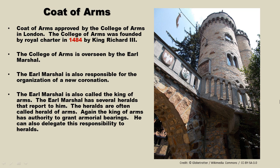Each coat of arms is approved by the College of Arms in London. The College of Arms was founded by Royal Charter in 1484 by King Richard III, and it is still active today. The College of Arms is the sole authority for all coats of arms in England. It is overseen by the Earl Marshal, who has a lot of power — they decide what your coat of arms are.